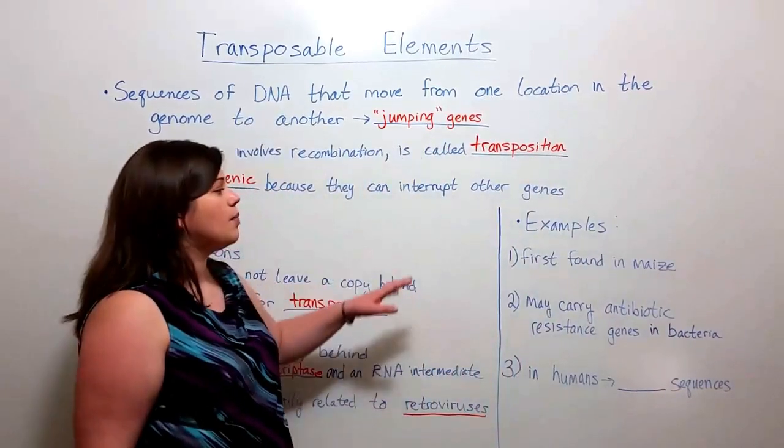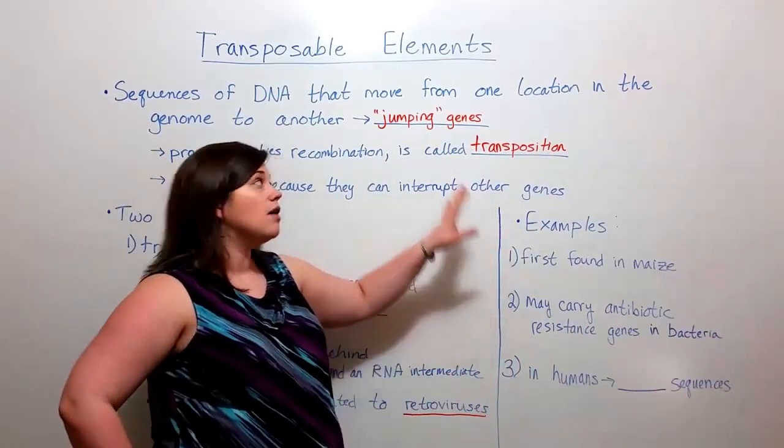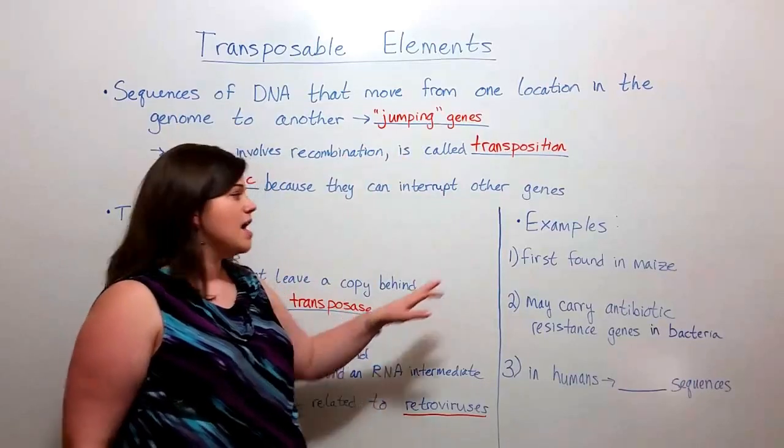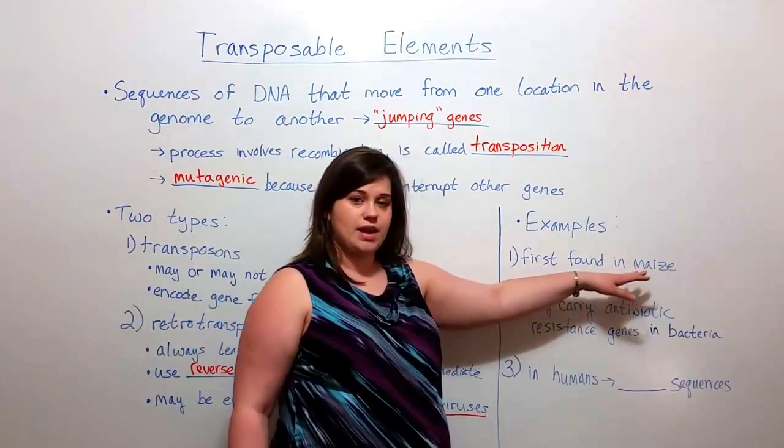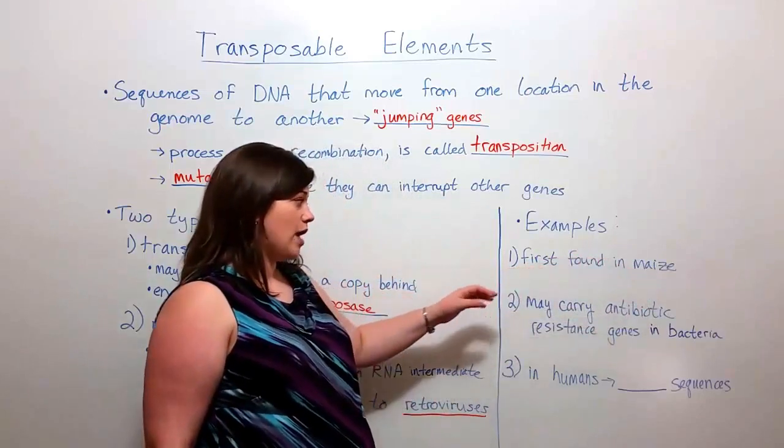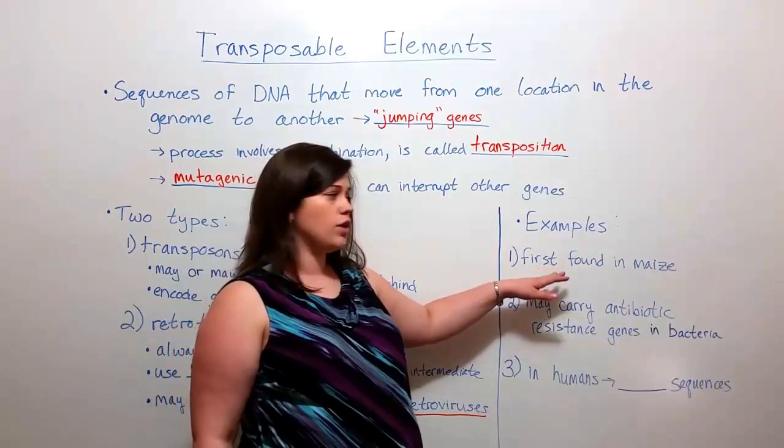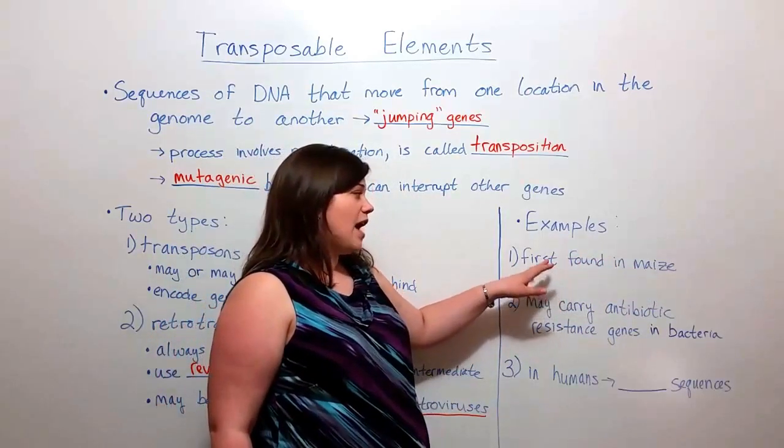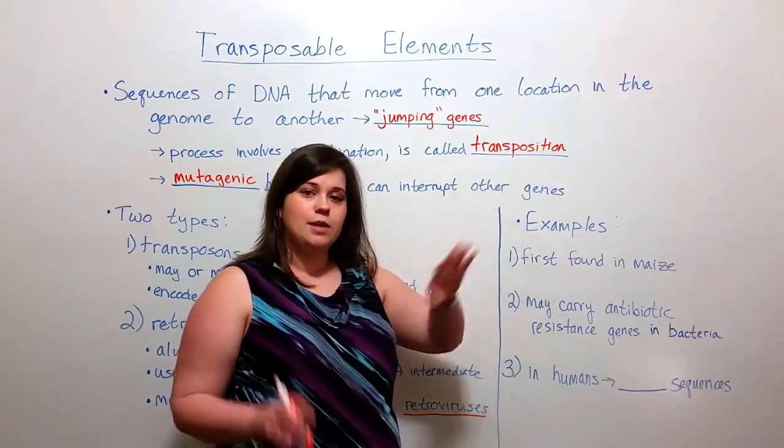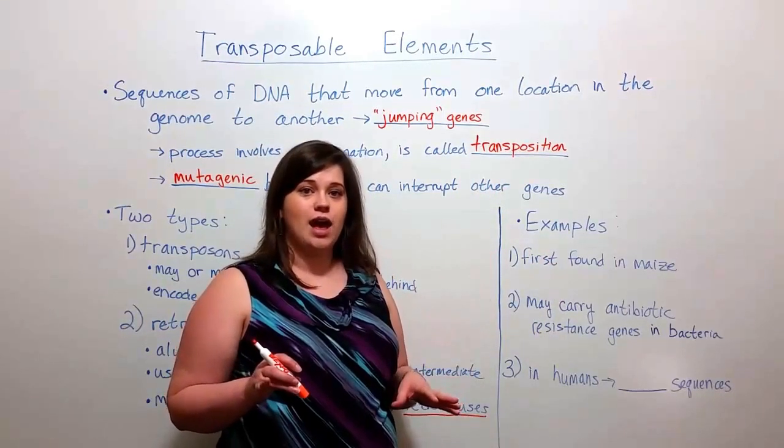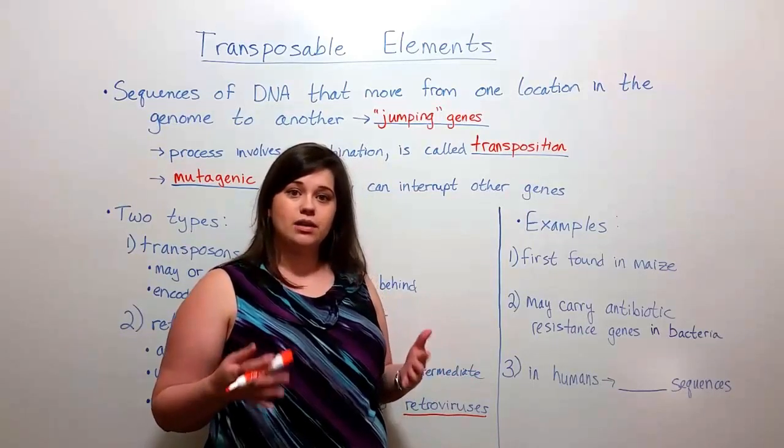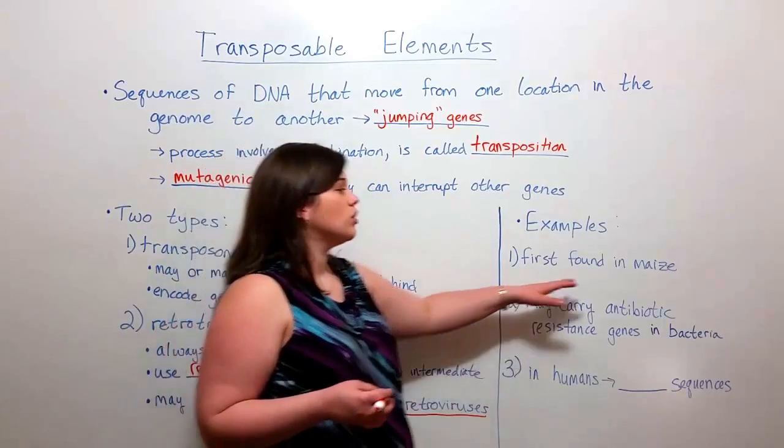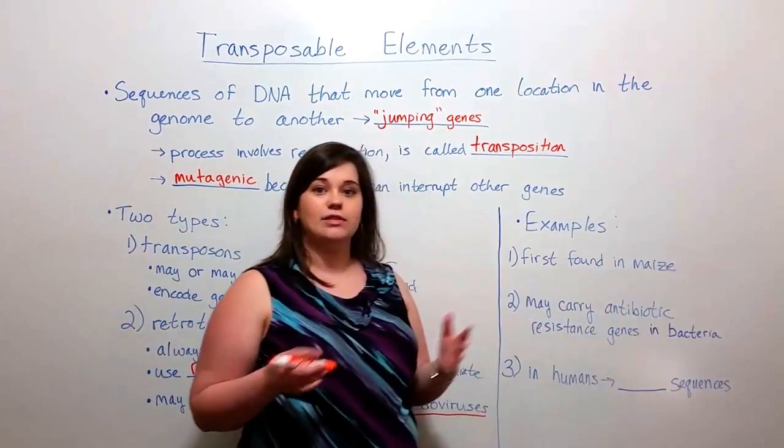Now let's talk about a couple of examples of transposable elements. They were first discovered in maize by a woman named Barbara McClintock, who actually won the Nobel Prize for her discovery. It was found that these transposable elements by jumping around in the genome could actually interrupt genes for pigment color, leading to the kernels of the maize having different colors.